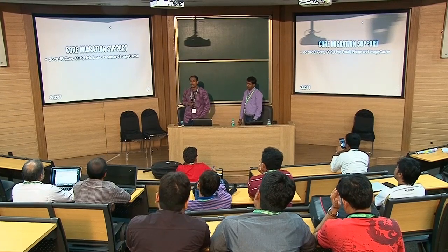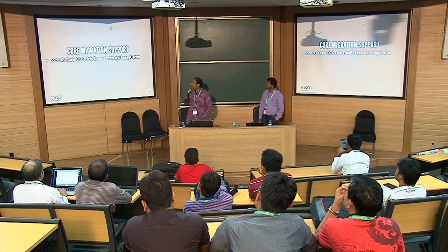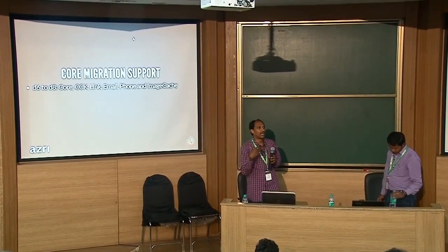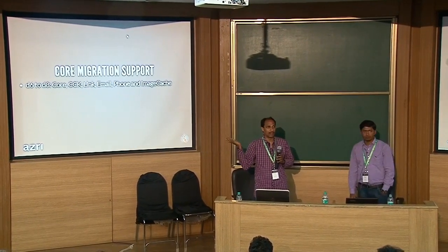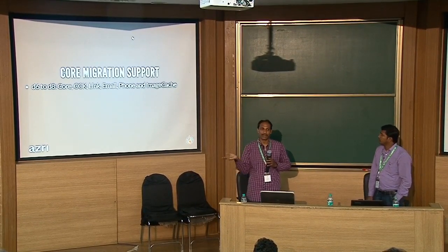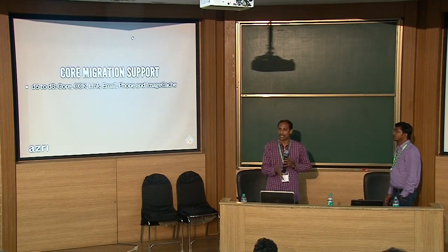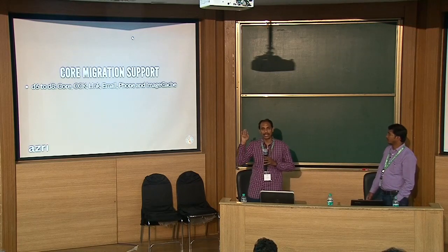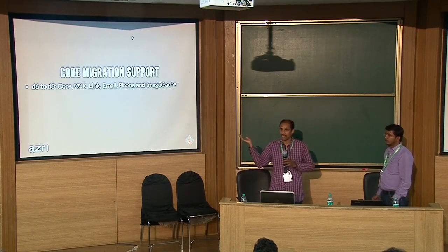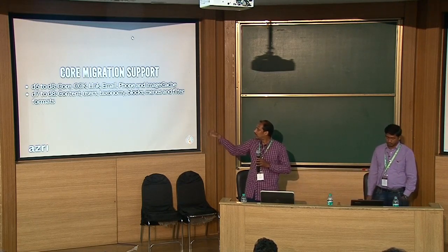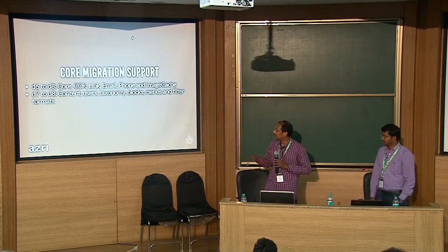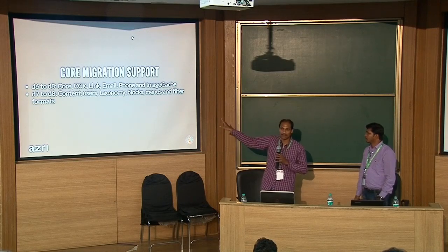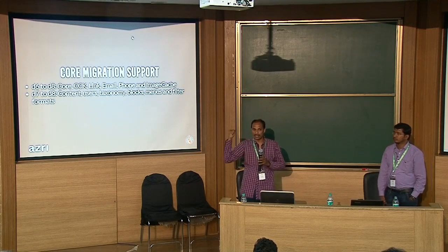In Drupal 8 core, there are four migration modules. For Drupal 6 to Drupal 8, the core supports migrating CCK, link, email, phone, and image caching modules. For Drupal 7 to Drupal 8, the core supports migrating content, users, taxonomies, logs, menus, and more. These are all directly available with the core migration — you don't need additional modules for these basic migrations.